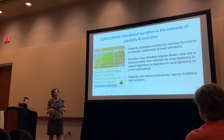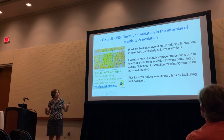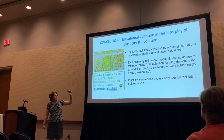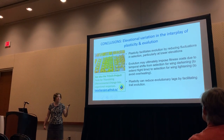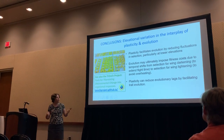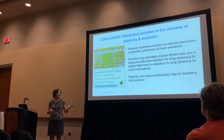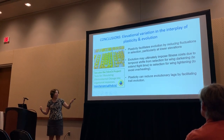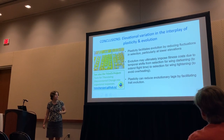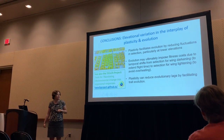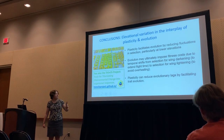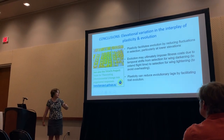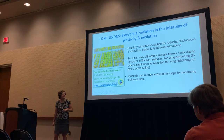In conclusion, we think evolution is going to really interact with plasticity, and plasticity's primary role will be in mediating environmental variability. Our models suggest that evolution might actually impose fitness costs due to temporal shifts from selection for wing darkening to extend flight time toward selection for wing lightening to avoid overheating. This is a new issue in thinking about the role of evolution in climate change in montane environments, and plasticity in this model can reduce evolutionary lags by facilitating trait evolution. We are also involved in computational projects to translate environmental change into organismal responses.